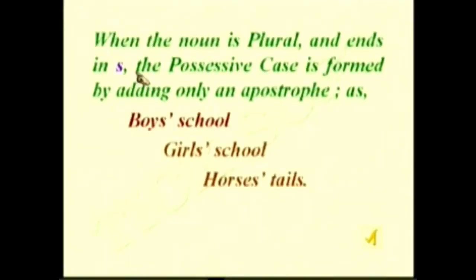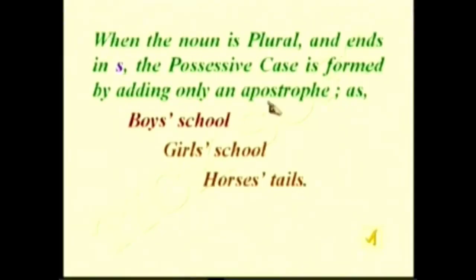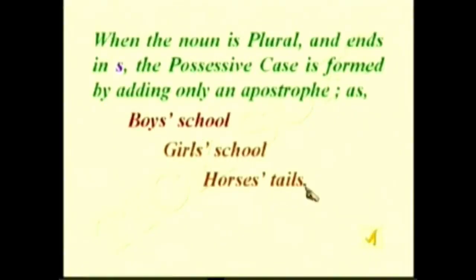When the noun is plural and ends in S, the possessive case is formed by adding only an apostrophe — there is no S after the apostrophe. Examples: 'boys' school,' 'girls' school,' 'horses' tails.'